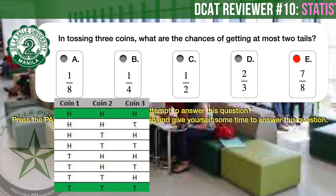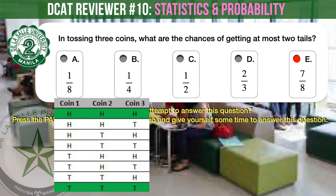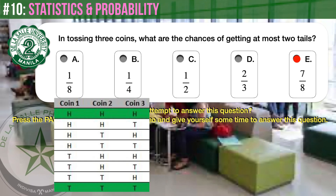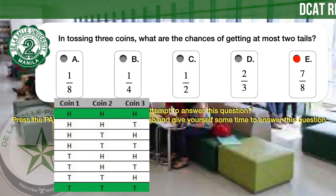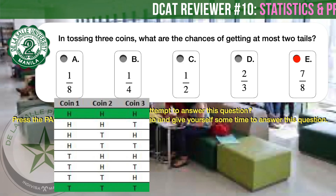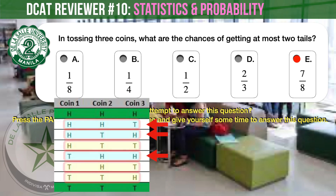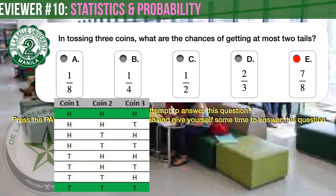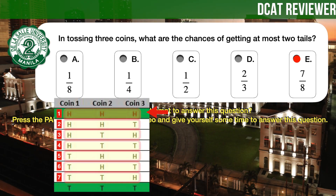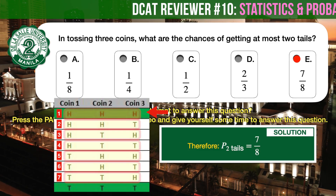In tossing 3 coins, there are 8 possible outcomes as shown. To get at most 2 tails, we can get either 2 tails and 1 head, 1 tail and 2 heads, or no tails at all. Let's find and count these from the list of possible outcomes. 2 tails and 1 head — there are 3 of these. 1 tail and 2 heads — there are also 3 of these. And no tail at all or all heads — there is 1 of this. Therefore, there are 7 ways of getting at most 2 tails, so the probability is 7 over 8.